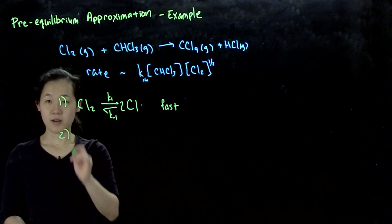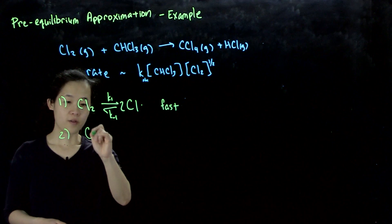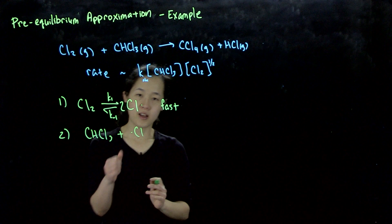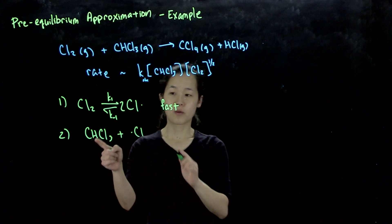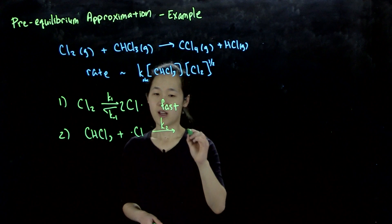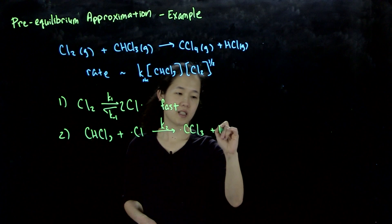The second step in this multi-step mechanism: chloroform reacts with chlorine, abstracting the hydrogen atom from chloroform. This is step 2, k₂, and this forms a carbon-centered radical plus HCl.